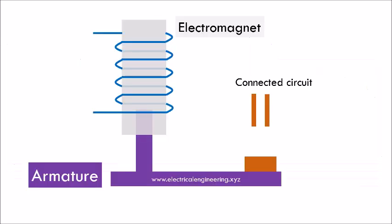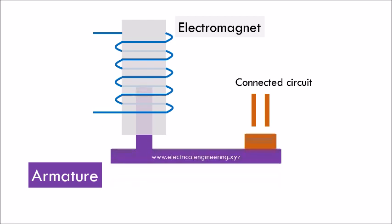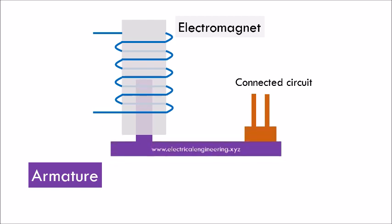Let's discuss the solenoid type relay. Under normal conditions the armature is stationary. In case of a fault, the electromagnet attracts the armature and the connected circuit is activated.